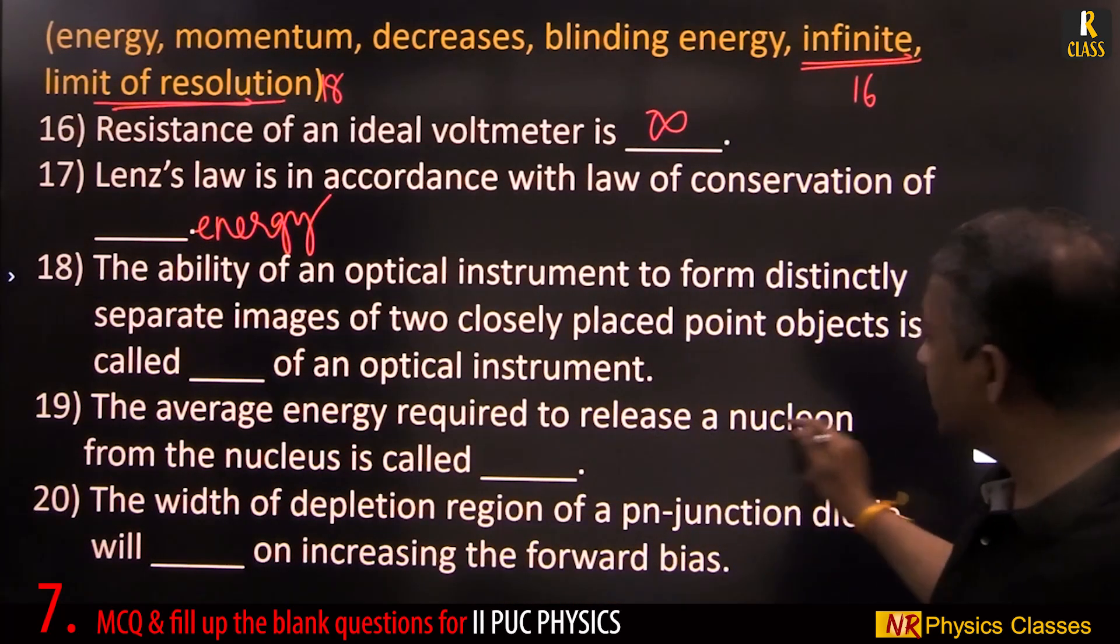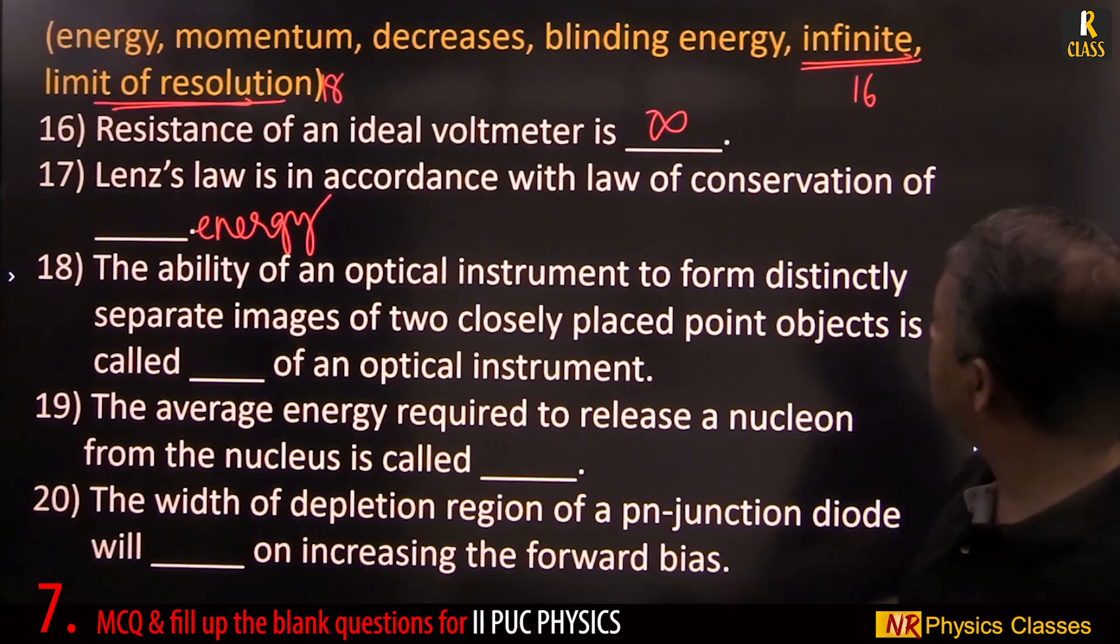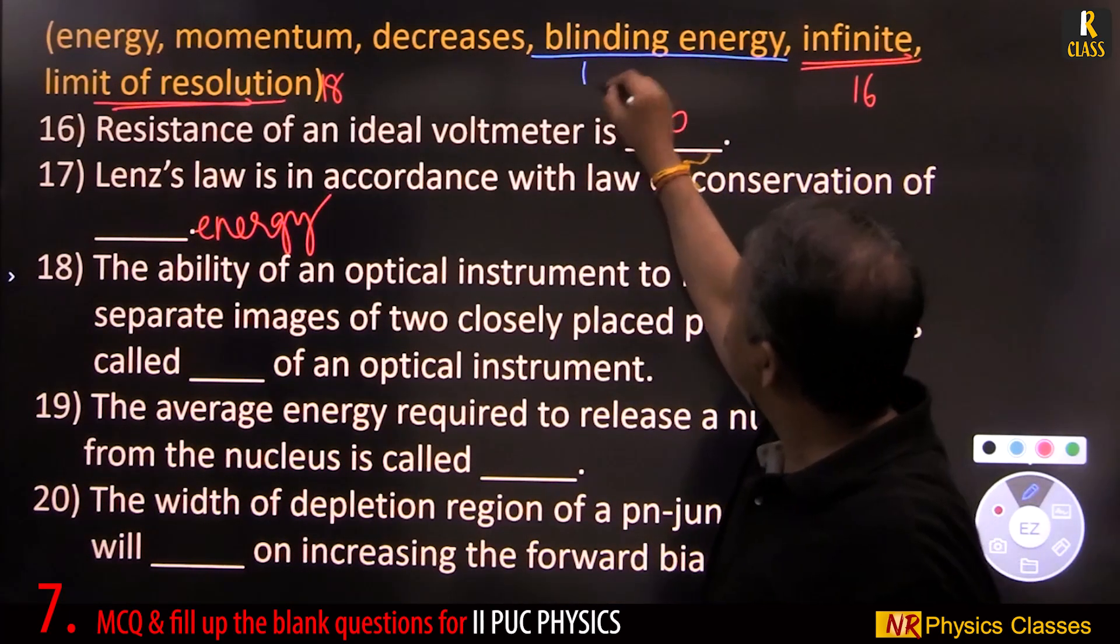The average energy required to release a nucleon from the nucleus is binding energy. So this is 19.